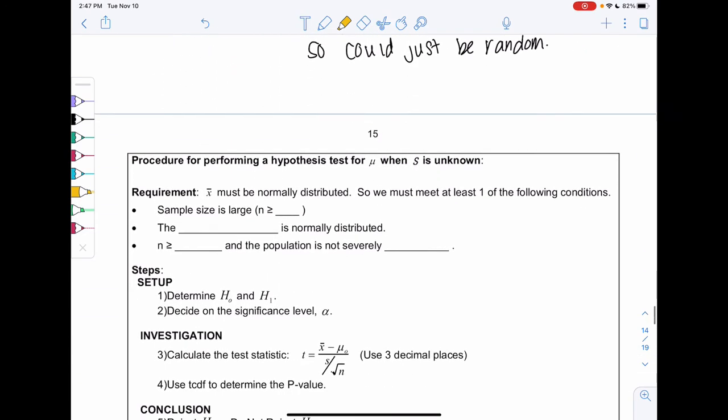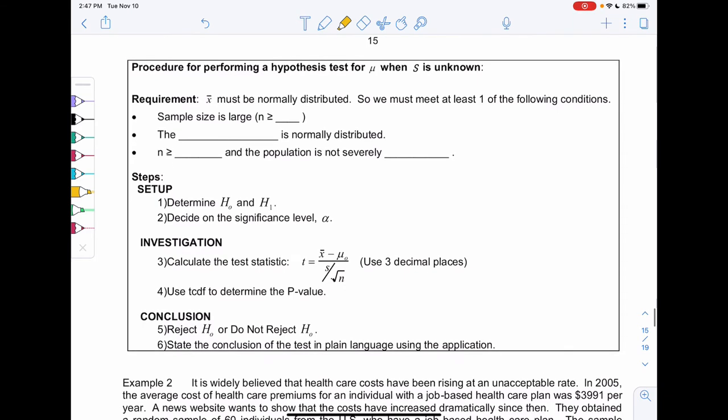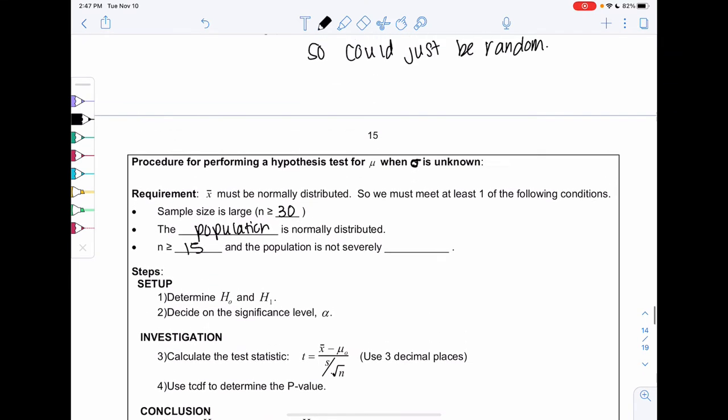The procedure for finding a hypothesis for mu when sigma is unknown, meaning we don't know the population standard deviation. X-bar must be normal. The requirements are the same as we've been talking about. If our sample size is large enough, n is at least 30. We have different requirements for means than proportions. If our sample size is not 30, then we need the population to be normal, or we need at least 15 if the population is not severely skewed.